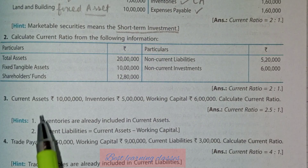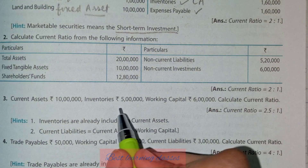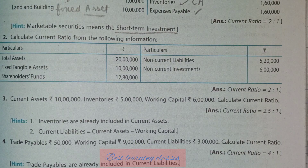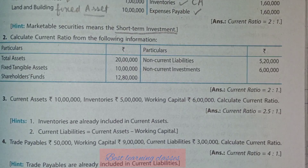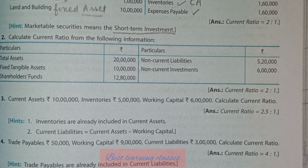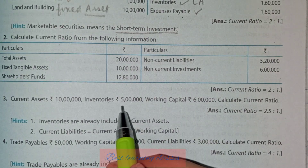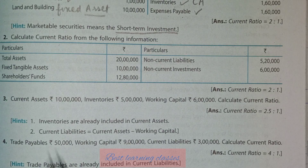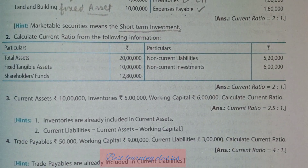Question number 3: current assets of 10 lakh are directly given. Inventories of 5 lakh are given. Working capital is 6 lakh. You have to calculate the current ratio. The hint says inventories are already included in current assets, so do not add 5 lakh again — that would be wrong. The inventories figure is given to confuse you; no separate treatment is needed for it when current assets are already given directly.